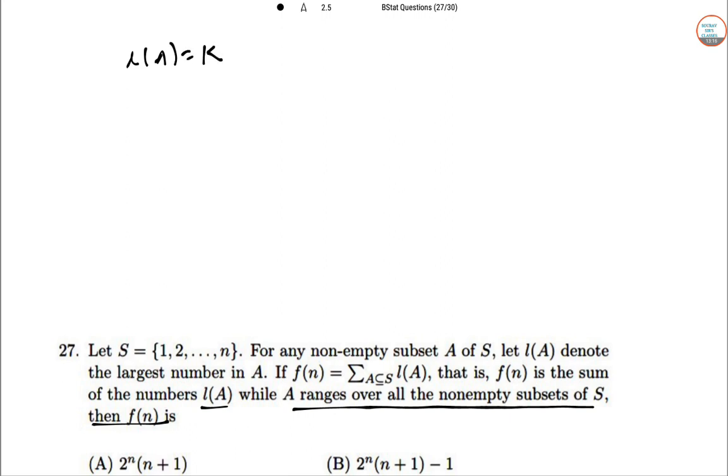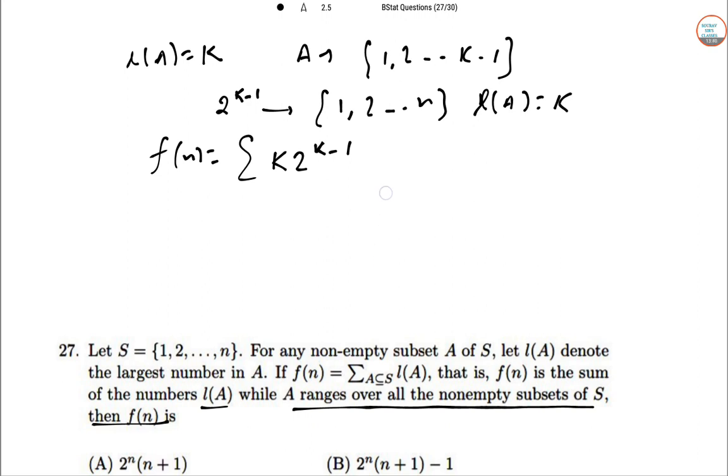Let L(A) = K. Then all elements of A can be arbitrary elements from {1, 2, ..., K-1}. It means that 2^(K-1) subsets of {1, 2, ..., n} with L(A) = K.